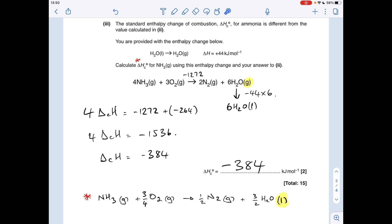So what I'm saying is effectively four enthalpy changes of combustion for ammonia equals that value plus six times that. So four enthalpies of combustion equals minus 1272 plus minus 264, which gives us minus 1536.